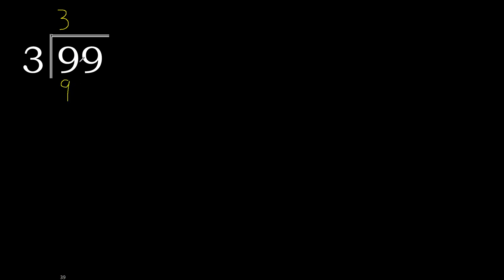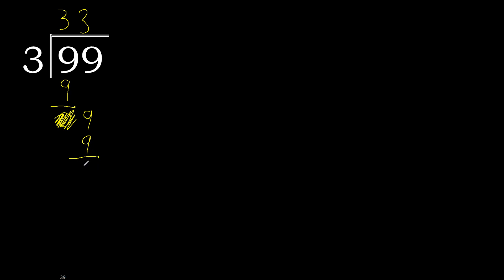9 is not greater. 9 minus 9 is 0. Next, eliminate 0 on this side. 9. 3 multiplied by 3 is 9, exact. 9 minus 9 is 0.